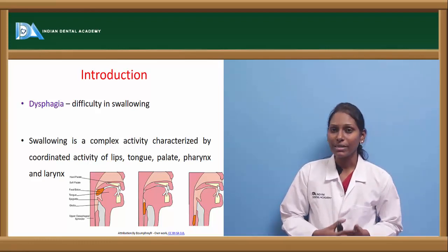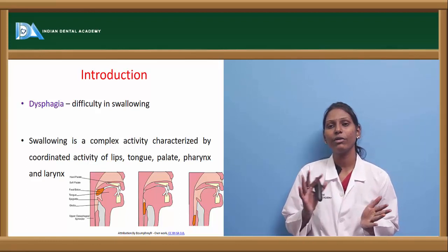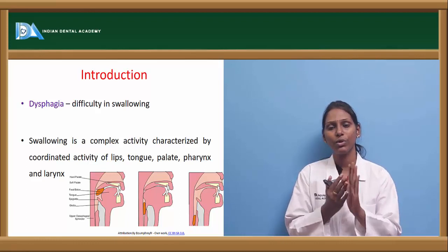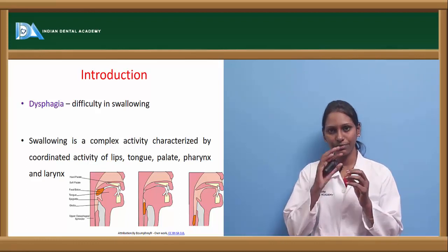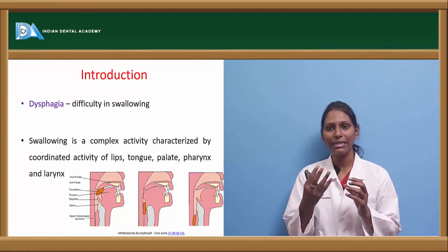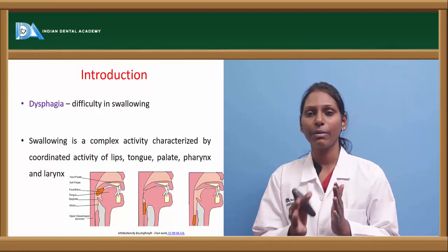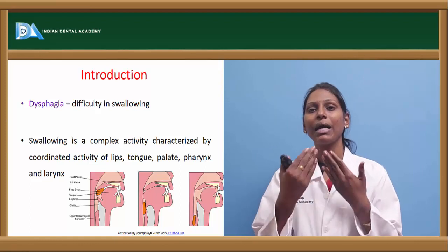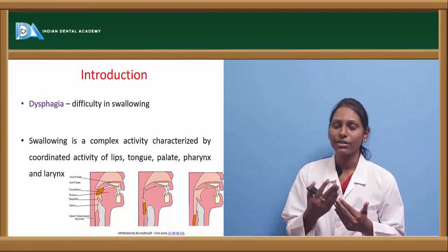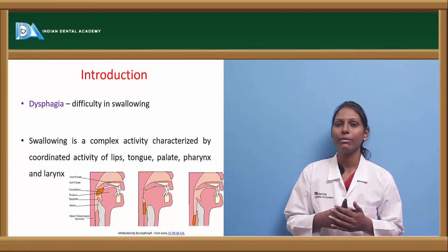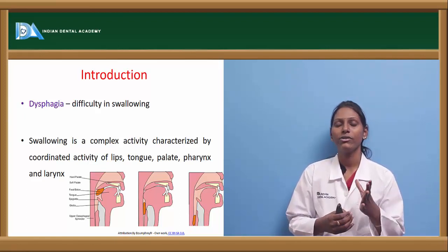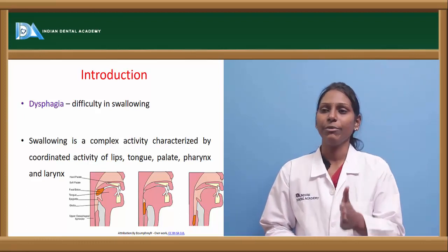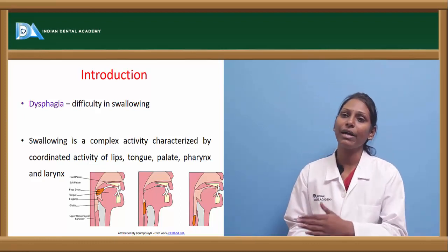Swallowing is usually a complex procedure involving various organs — your lips, buccal mucosa, and tongue, which make a bolus of food as the teeth crush it. The tongue, lips, and buccal mucosa along with the vestibule form the bolus, which is then swallowed. The esophagus, soft palate, and pharynx also help in swallowing. So swallowing is a complex activity characterized by coordinated activity of lips, tongue, palate, pharynx, and larynx.